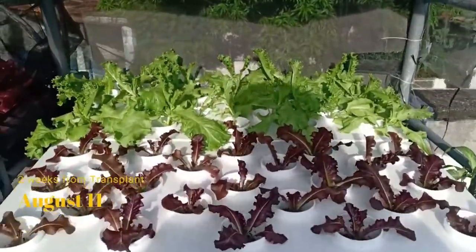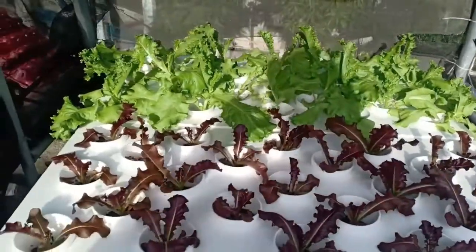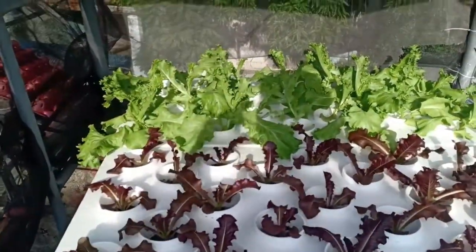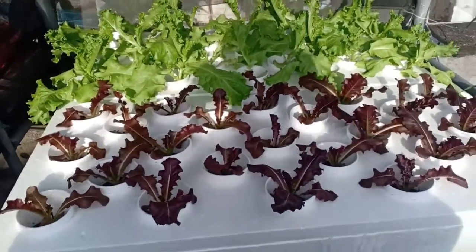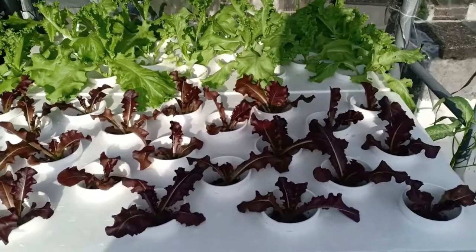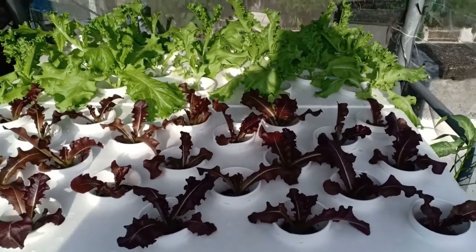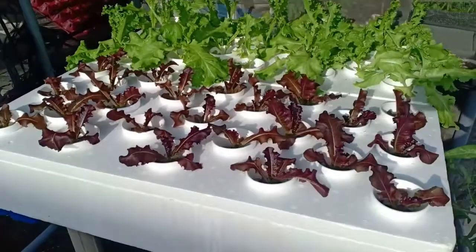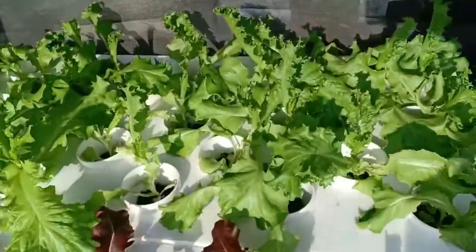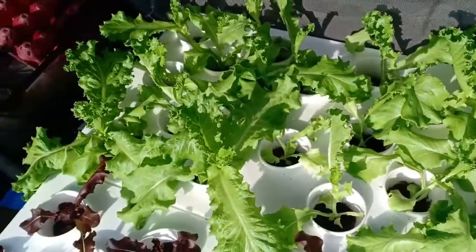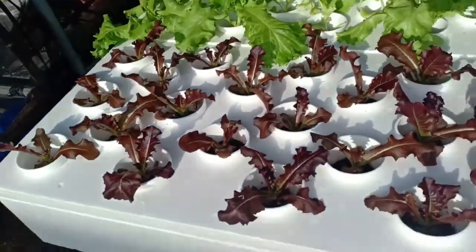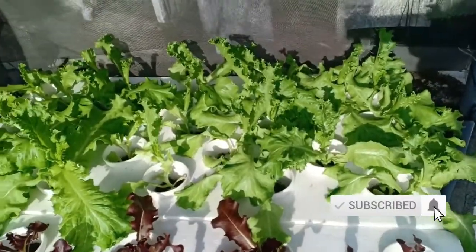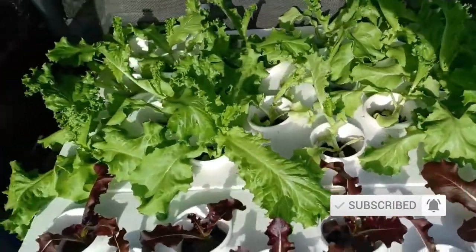Alright, this is an update para dun sa ating lettuce na tinanim nung July 21. Yung green tinanim yan nung July 21, tinransplant natin and yung Lolo Rosa yung red tinransplant ko naman yan July 25. So in about two more weeks iha harvest na natin ulit yun. Iha bait ko ulit kayo mga kakwentuhan dito sa ating project ng lettuce. So yan oh, itan yun, ang ganda ng mga tubo no. Kratky method hydroponics, pwede yung pwede nyo gawin din toon sa mga sarili nyo mga backyard or front yard or any space na meron kayong available.